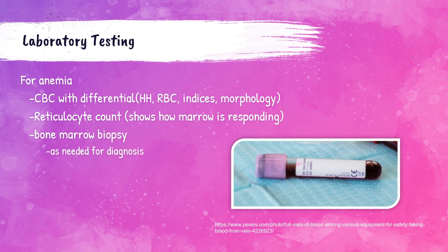So how do we test for anemia? A complete blood count or CBC with differential needs to be ordered. This includes hemoglobin and hematocrit, red blood cell count, red blood cell indices which are MCV, MCH, MCHC, and RDW, and also morphology of the red blood cells — which is the differential part of the CBC with differential order. A reticulocyte count can also be ordered, which shows how the marrow is responding. Both the CBC with differential and the reticulocyte count are done on a lavender top tube — whole blood EDTA — and remember this tube cannot be clotted; even a very small clot means it has to be recollected. We can also do a bone marrow biopsy as needed for diagnosis.